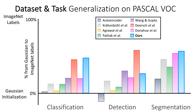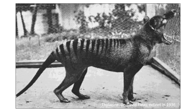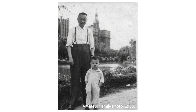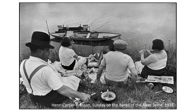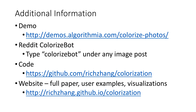How does our method actually work on legacy black and white photos? We show a few examples here. This is a thylacine, which went extinct in 1936 — there are no color photos of it, as far as we know — and here's our result. Here's an amateur family photo taken in the 1950s, actually of my father and my great-grandfather. This is a professional photograph from Henri Cartier-Bresson. And finally, this is an iconic American photograph of Migrant Mother. For additional information, you can go online to see the demo, test our system on Reddit, look at our code, or go to our website for the full paper, visualizations, and user examples. We'll play us out with a user video that was submitted to us while we take questions. Thank you for your attention.